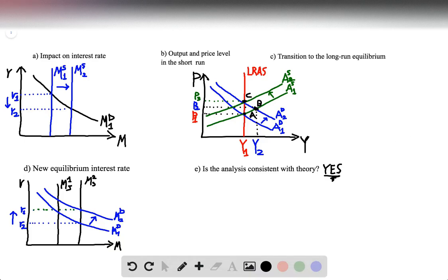In part B, we need to use the model of aggregate demand and aggregate supply to illustrate the impact of this change in the interest rate, the impact of the change in the interest rate on output and the price level in the short run.